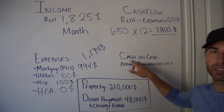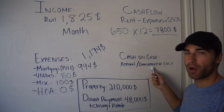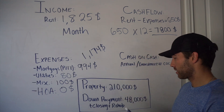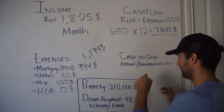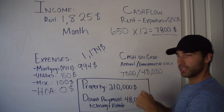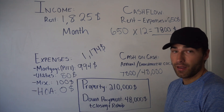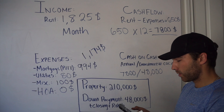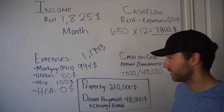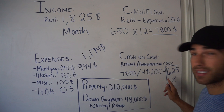Now to figure out our cash on cash return — this is what tells us if the deal is a good one. You take the annual income and divide it by how much you invested in the property: down payment, closing costs, and rehab all bundled together, which was $48,000. So we plug in $7,800 divided by $48,000. This gives us a percentage — that percentage is your cash on cash return. The result is 16.25%, and we're going to circle it because this is a very, very important number.